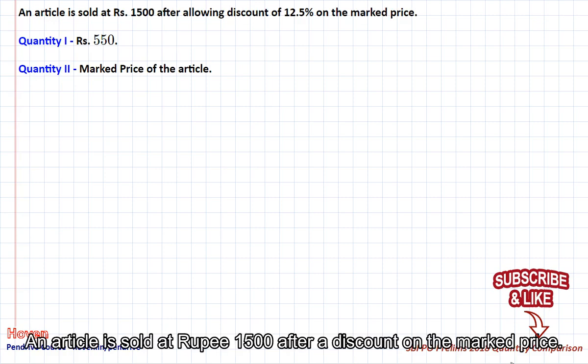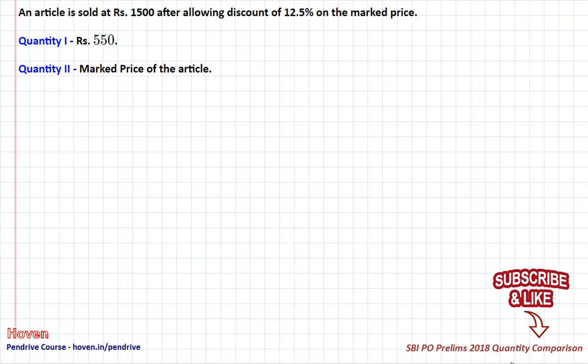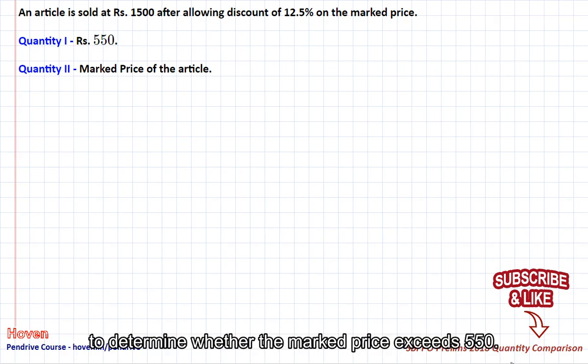An article is sold at rupee 1500 after a discount on the marked price. To determine whether the marked price exceeds 550.